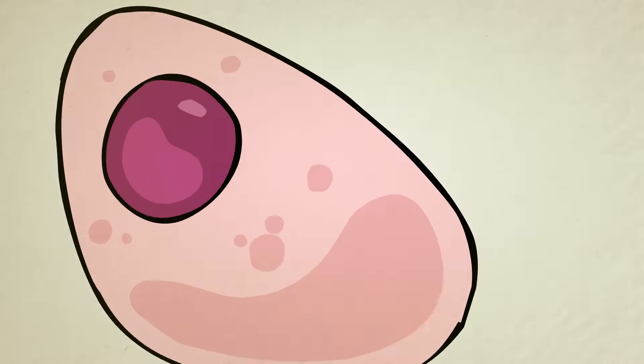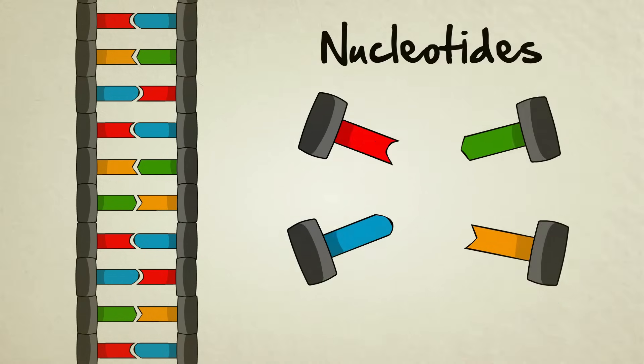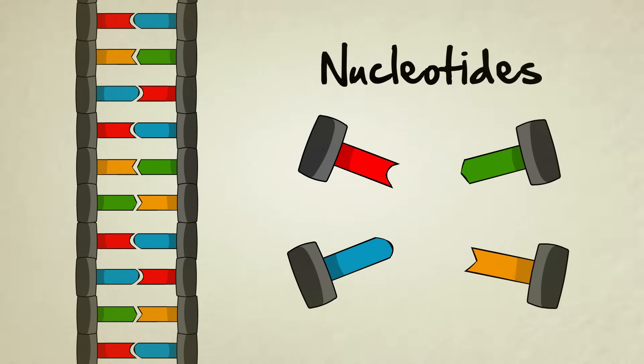Each one of our cells contains 46 strands of DNA. A single strand is made of millions of particles called nucleotides, and these nucleotides come in four different types, which scientists have labeled A, C, T, and G.